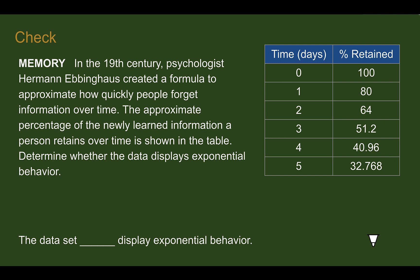Check your understanding: Read through the situation and look at the table to determine if this table shows exponential behavior. Pause the video now and complete the check. You should have said this does display exponential behavior. Each time it goes up one, it is actually getting multiplied by 0.8 — it's 0.8 again and then 0.8 again and then 0.8. Since it's being multiplied by the same amount, we can say it's exponential.